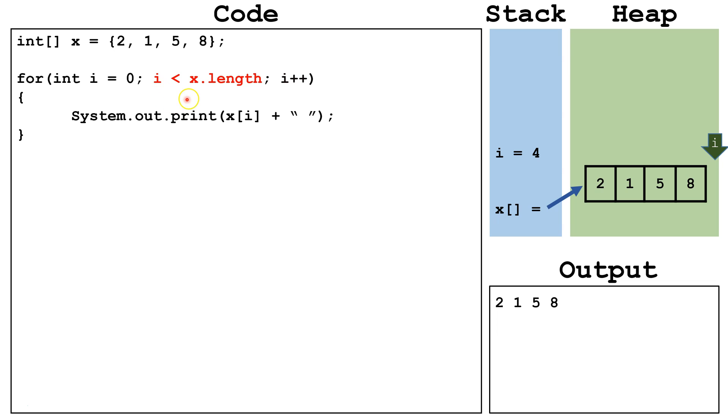We check is 4 less than the length of the array, so is 4 less than 4. It is false. So we terminate the loop. So now we've gone through the loop and we've printed out the contents of the array.